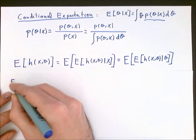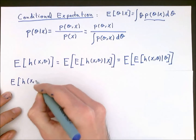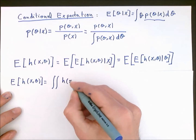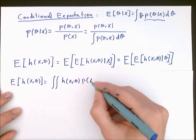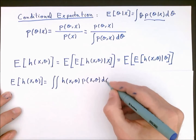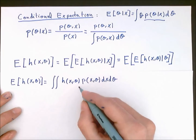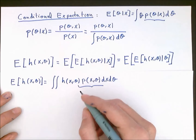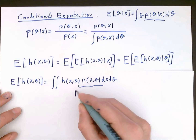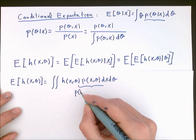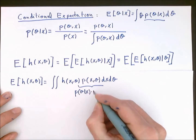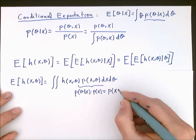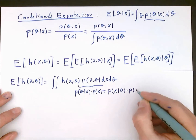To see that this is true, we write the expectation of the function in its integral form. Since we have two random variables, it becomes a double integral of the function multiplied by the joint probability density function of both variables. From conditional probability, this joint PDF can be written as the posterior PDF of z given x times p of x, or alternatively as the posterior PDF of x given z times the PDF of z.